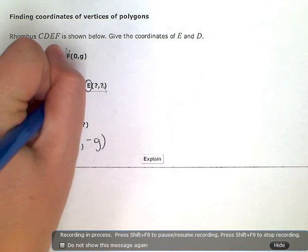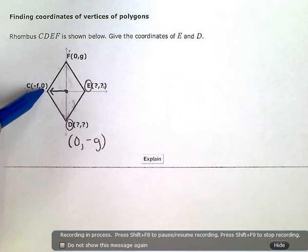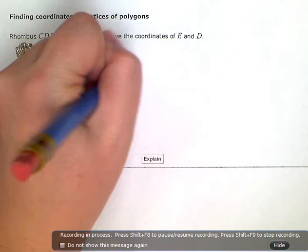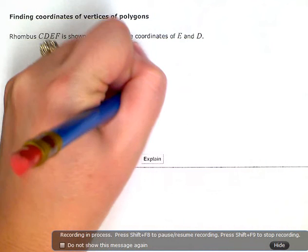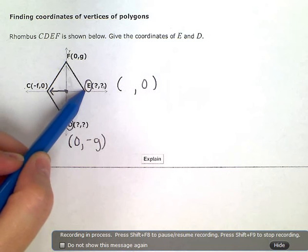Going this way, I've gone 0 up or down because I'm staying on the x-axis this time. So over here, I'm still going to have a 0 right here. I still haven't gone up or down at all with this point over here. I'm right on the x-axis.